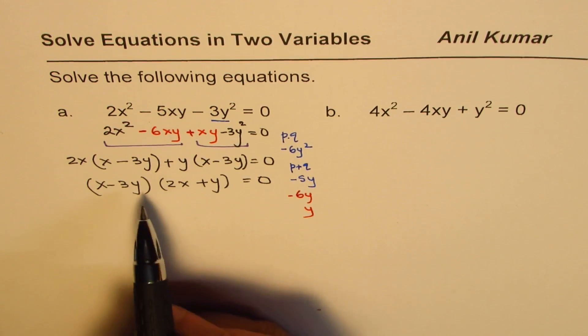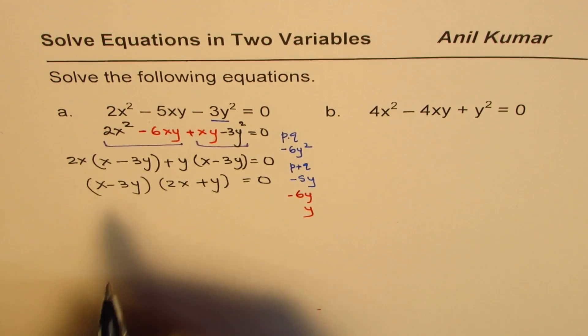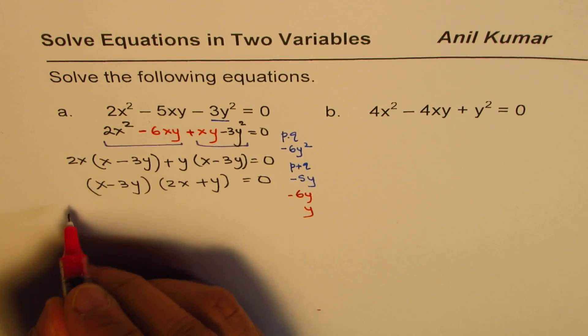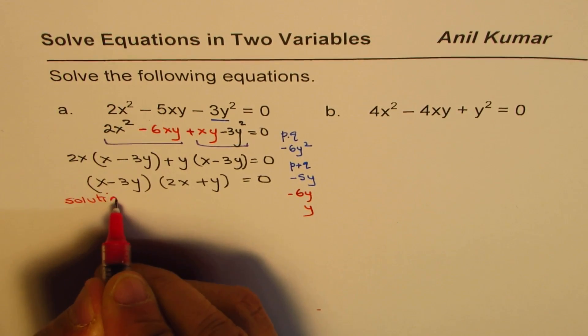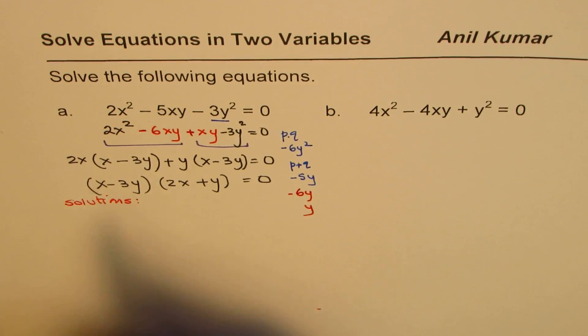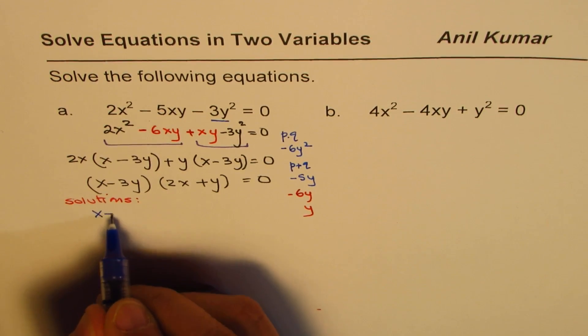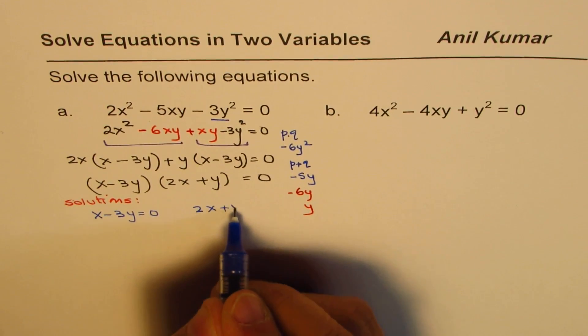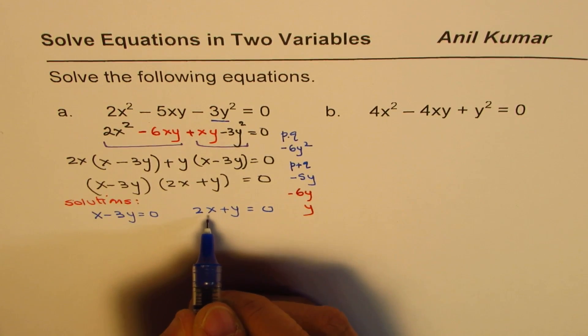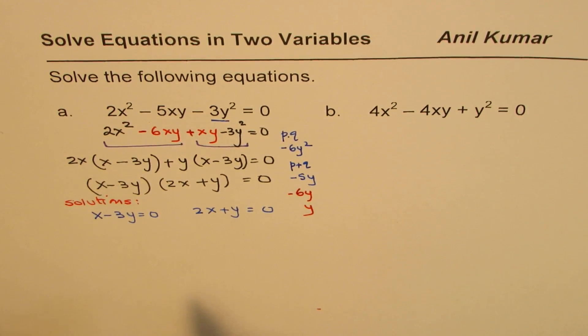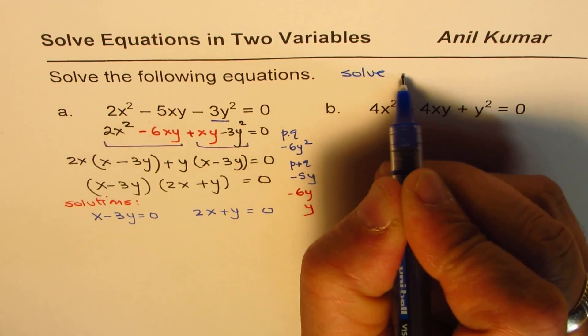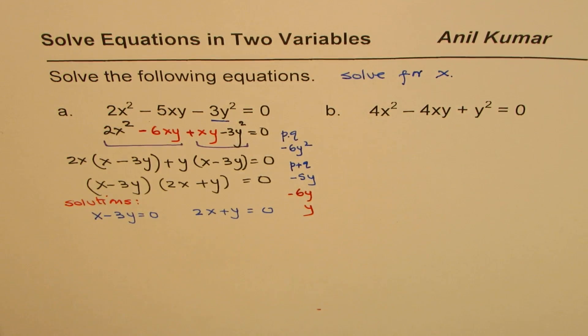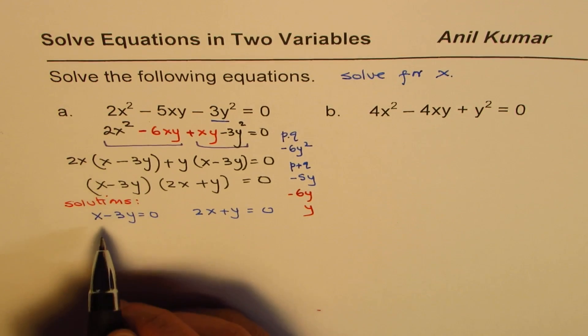Once you get to the factored form, then equate each factor to 0, which will give you two different solutions. So from here, we are looking for solutions now. Equate each factor to 0. So we can write x minus 3y equals to 0. Solve for x. And we can equate 2x plus y equals to 0. Solve for x. So we'll treat this equation as the equation in one variable x. Let's solve.